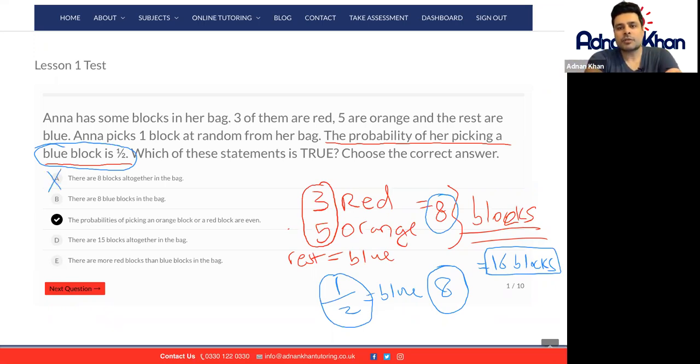B says there are eight blue blocks in the bag. Well yeah that makes sense because half of the blocks, half of the sixteen blocks are blue. But let's just have a quick look at C, D and E just to make sure that we're right.